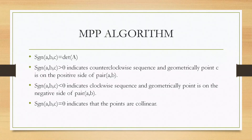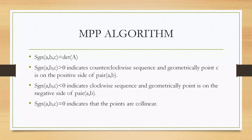The signum of points A, B, C is equal to the determinant of matrix A. If the signum of points A, B, C is greater than 0, it indicates that the sequence is in a counter-clockwise direction, and geometrically, point C is on the positive side of the pair A, B. If the signum of A, B, C is equal to 0, then it indicates that the points are collinear.